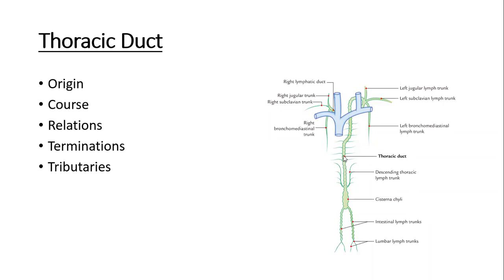The thoracic duct continues ascending until it reaches the level of the 4th or 5th thoracic vertebra — sometimes written as the junction between T4 and T5. At this level, it takes a sharp left turn and passes behind the esophagus, then continues to ascend within the superior mediastinum, running upwards until it reaches the root of the neck.